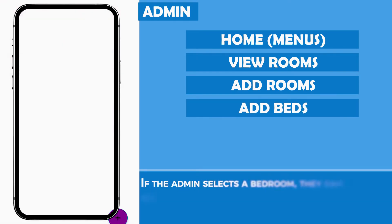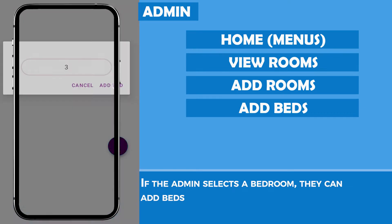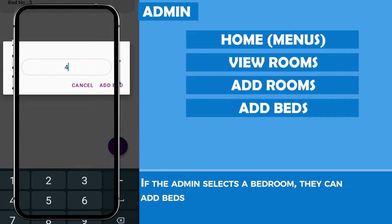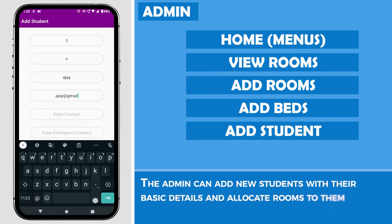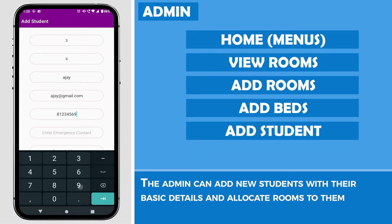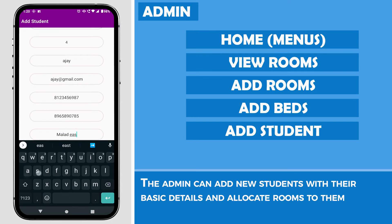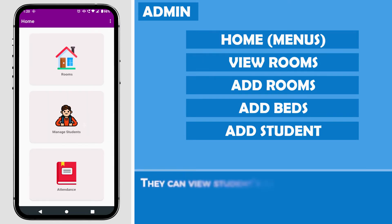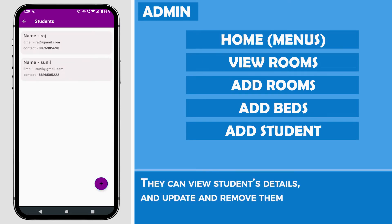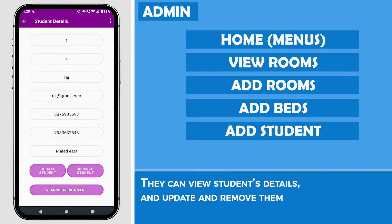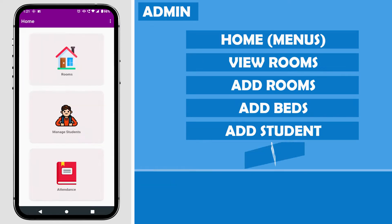If the admin selects a bedroom, they can add beds. The admin can also add new students with their basic details and allocate rooms to them. They can view students' details and update and remove them.